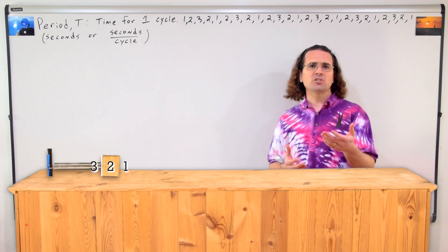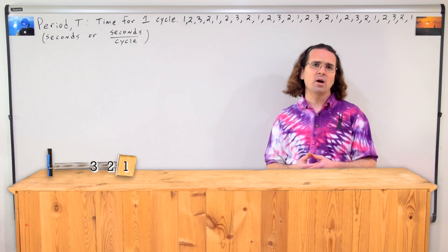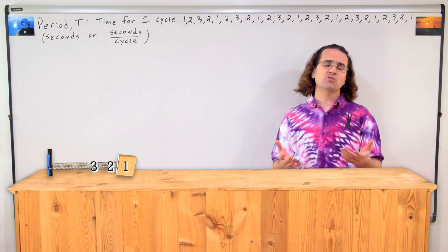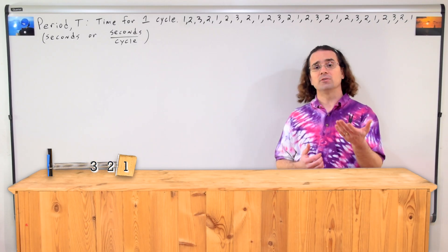Olivia, if the object starts at position 1, please describe one full cycle. If it starts at position 1, it goes through 2, then 3, then back to 2, then back to position 1 for one full cycle. So the time it takes to do that will be the period.